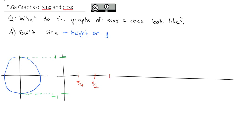So we've got pi over 4, pi over 2, 3 pi over 4, pi, 5 pi over 4, 3 pi over 2, 7 pi over 4, and then 2 pi. Those are about equidistant apart, and what's nice about each of those distances is they represent the quarters and the tops and edges of the circle.